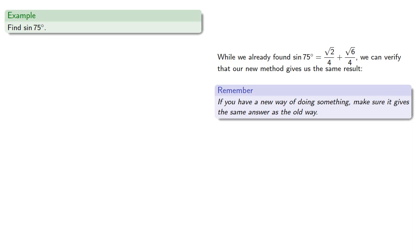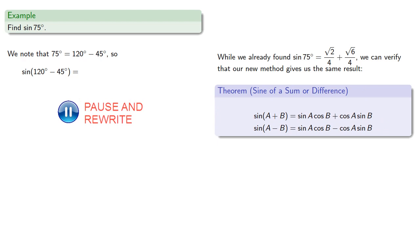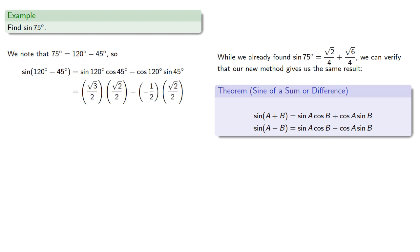So I want to write 75 as a difference, how about 120 minus 45? And so the sine of the difference is, substituting in our values, and simplifying, uh oh, oh wait, they are the same, we're good.